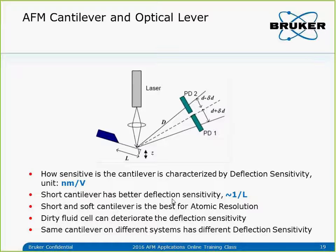For fluid imaging, deflection sensitivity is also affected by how clean the fluid cell is. If there's a lot of dirt on the fluid cell's glass window, the refracted laser will disperse and the laser spot on the photodetector will be larger, making it less sensitive. So deflection sensitivity is also related to fluid cell cleanliness — make sure the fluid cell is clean. Also, even the same cantilever on different AFM systems will have different sensitivity because the optical path is different.